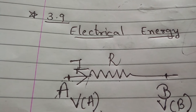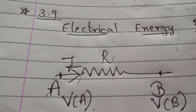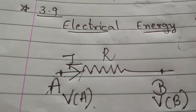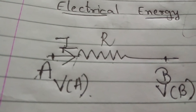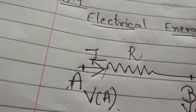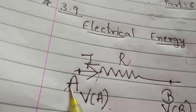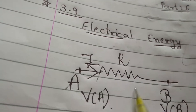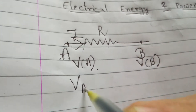Suppose the potential at point A is VA and the potential at point B is VB. From this figure, we can say that point A is at higher potential than VB, because whenever current is passing through the resistance from A to B, the current suffers due to the resistance of the conductor. So at A, potential is high, while at B, potential is low. Therefore, VA is greater than VB.